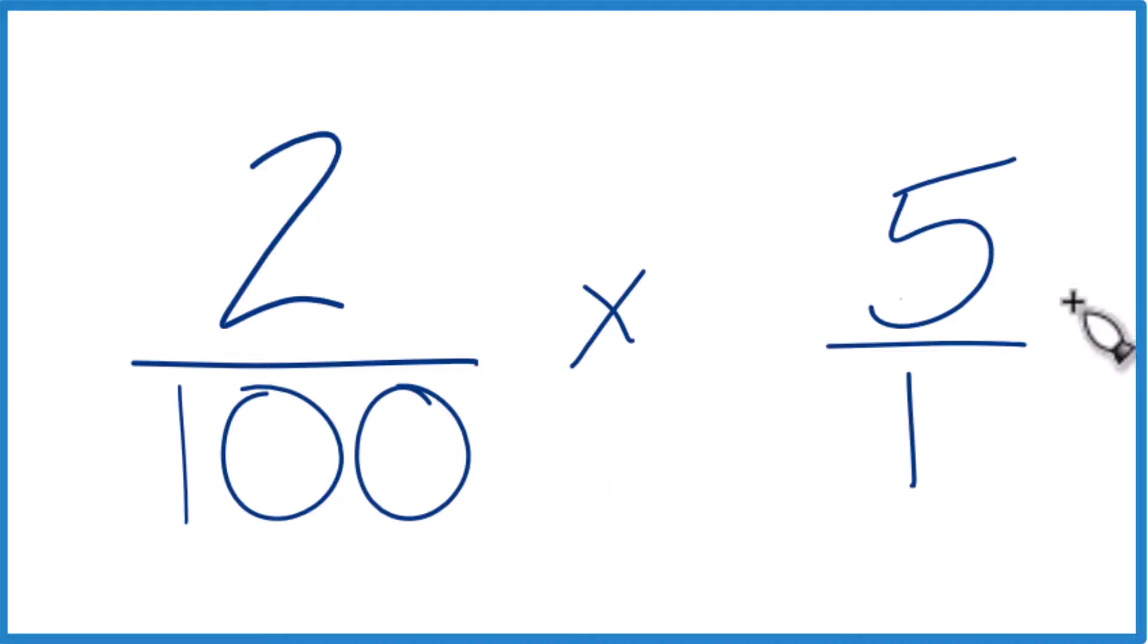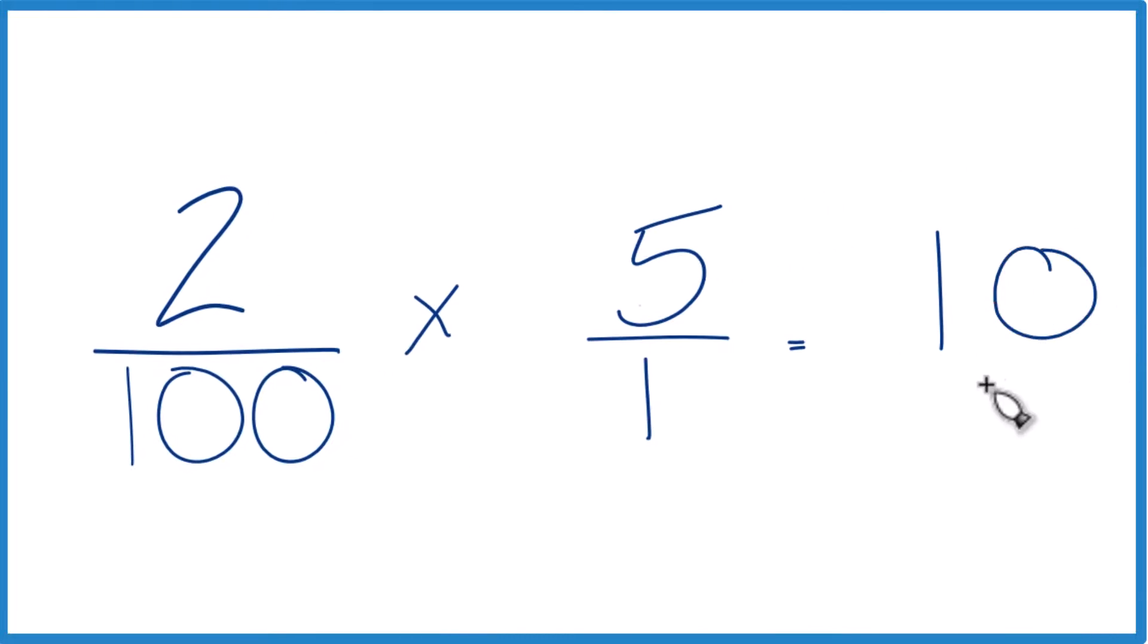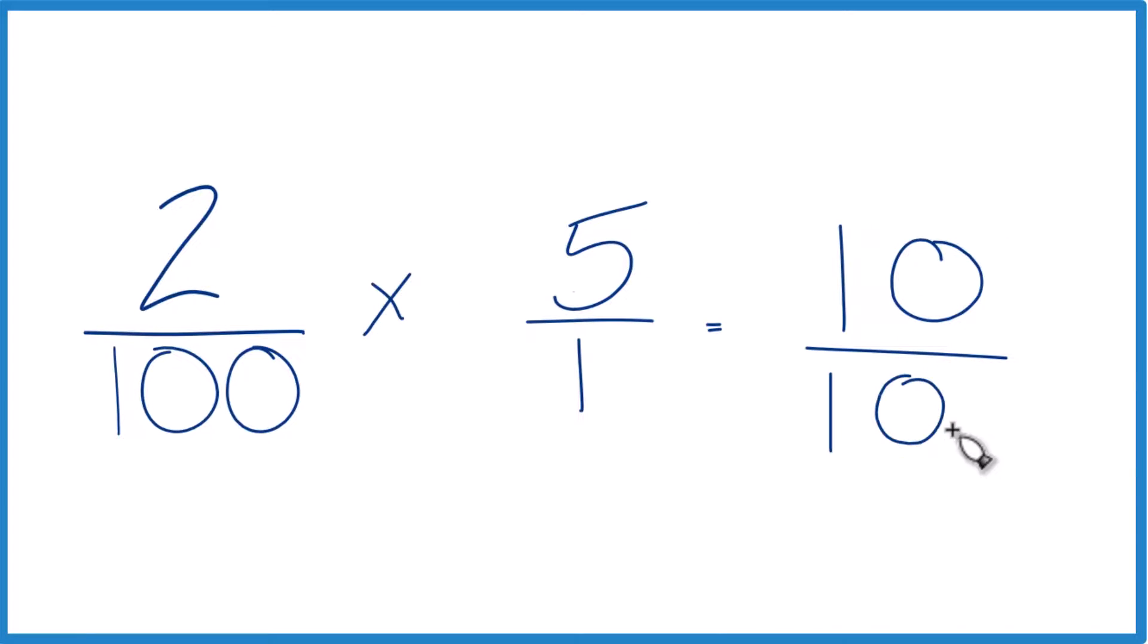So 2 times 5, that equals 10. And then 100 times 1 is 100.